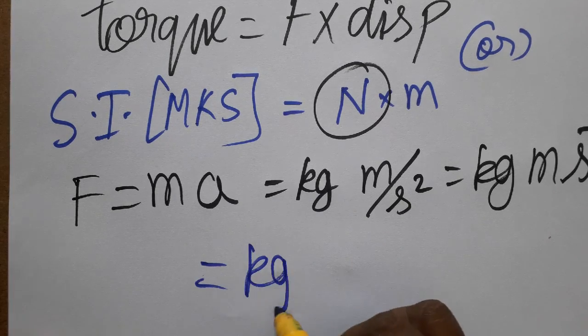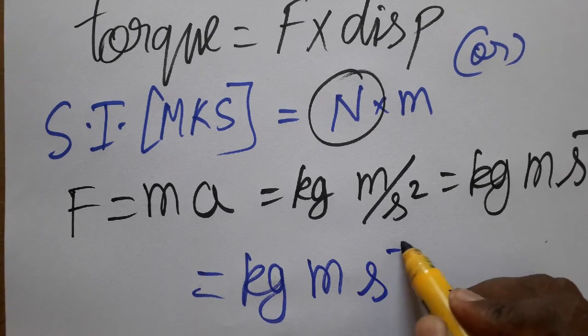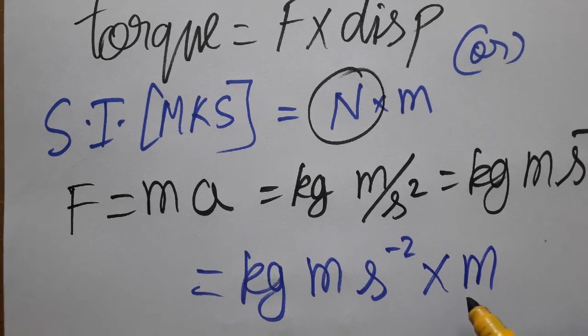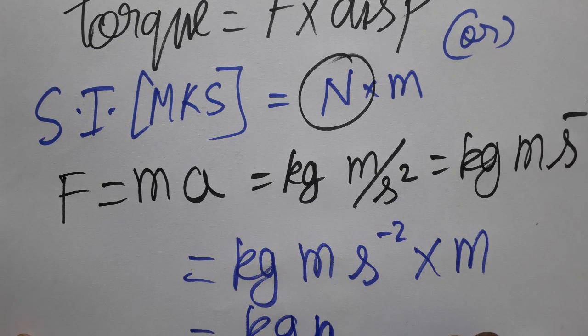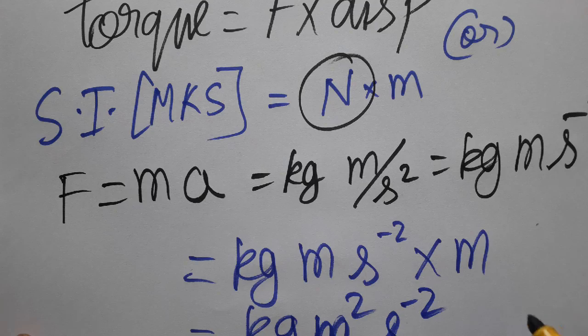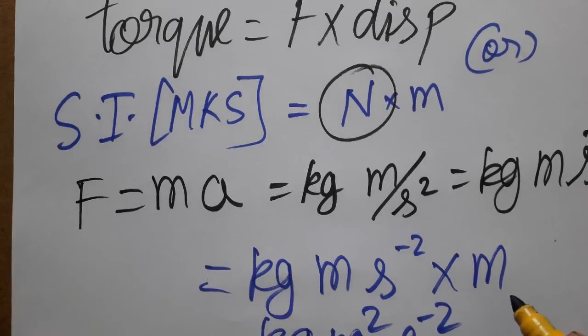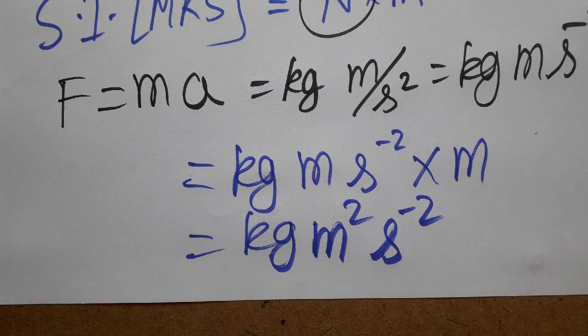Now we get the unit of torque, which is kg meter second minus two into meter. So finally we get kg meter squared second minus two. This is the unit of torque, SI unit of the torque.